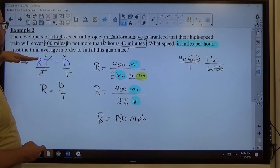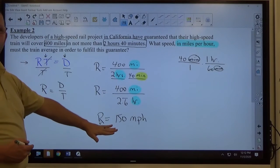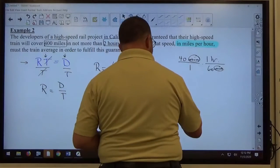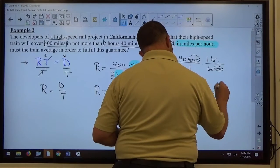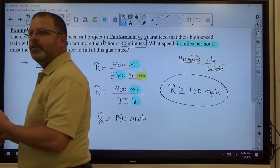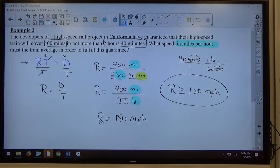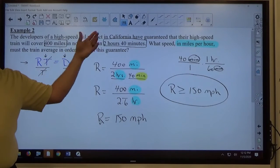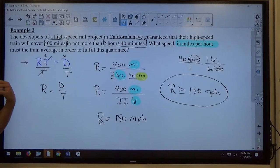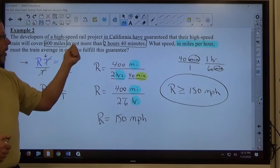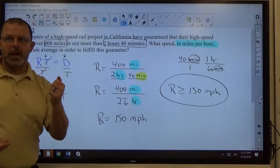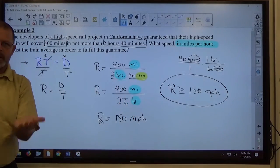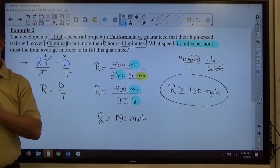So, to answer the question, what speed of miles per hour must the train average in order to fulfill this? Because 150 is right, but we can even say R could be greater than or equal to 150 miles per hour. 150 gets in there right at 2 hours and 40 minutes. Anything faster than 150 just gets in there sooner. And it says not more than, which means less than or equal to. So, less than or equal to this time, so it has to be greater than or equal to that rate. If the time gets smaller, the rate has to get bigger to make that distance stay the same.